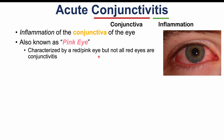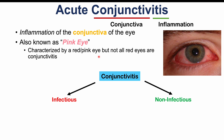Not all red or pink eyes are conjunctivitis — that's important to note. There are many different causes of acute conjunctivitis, which we can break down into two main categories: infectious and non-infectious. Infectious causes include viral and bacterial conjunctivitis, while non-infectious causes include allergic responses, chemicals that contact the conjunctiva, and mechanical irritation or injury.